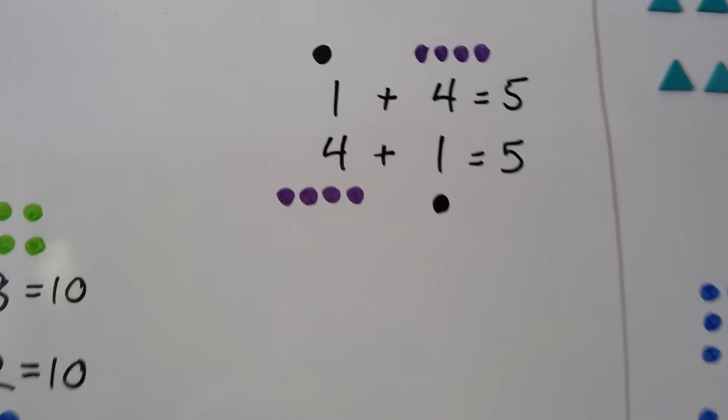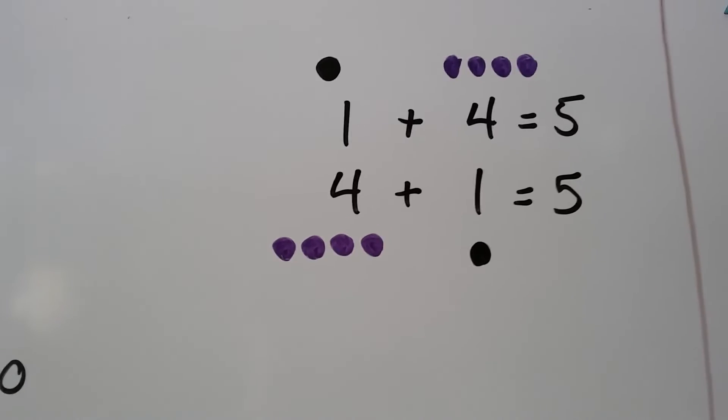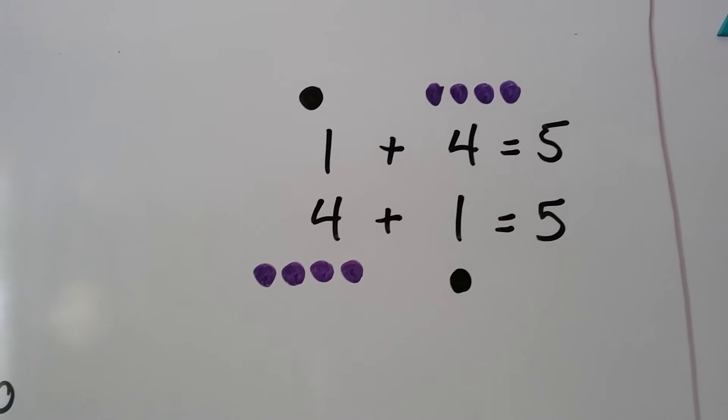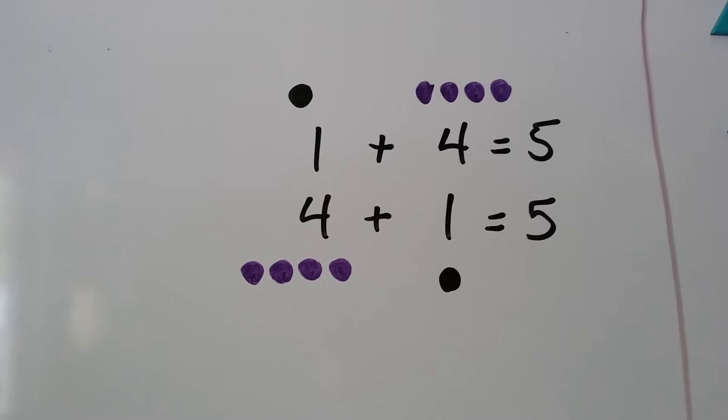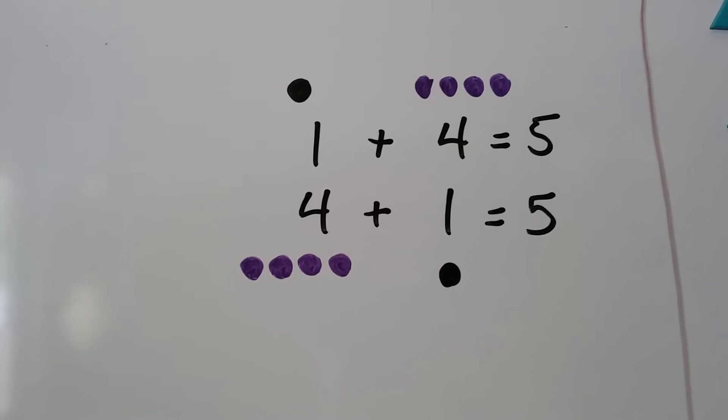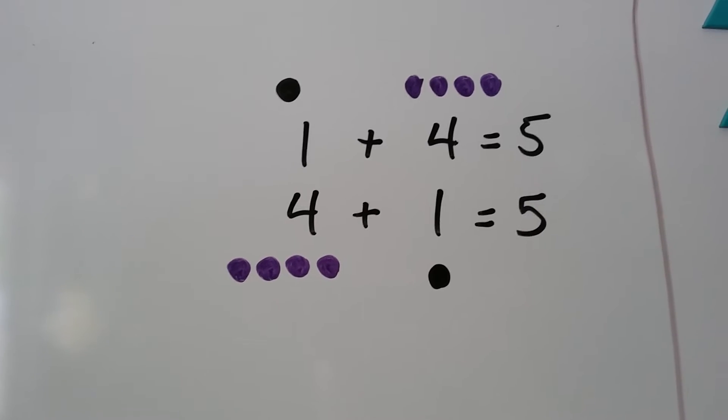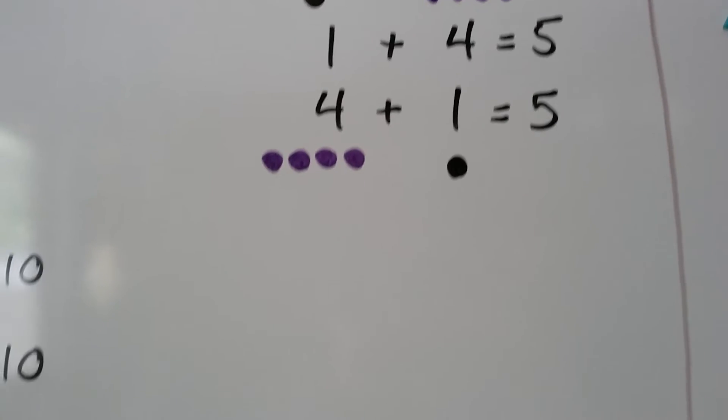We have one plus four equals five, or four plus one equals five. They still both equal five. It doesn't matter the order.